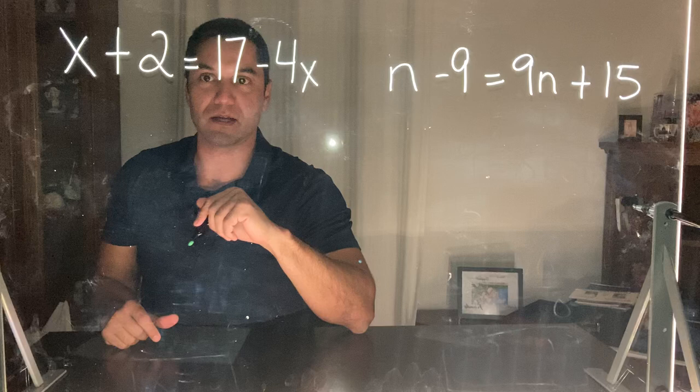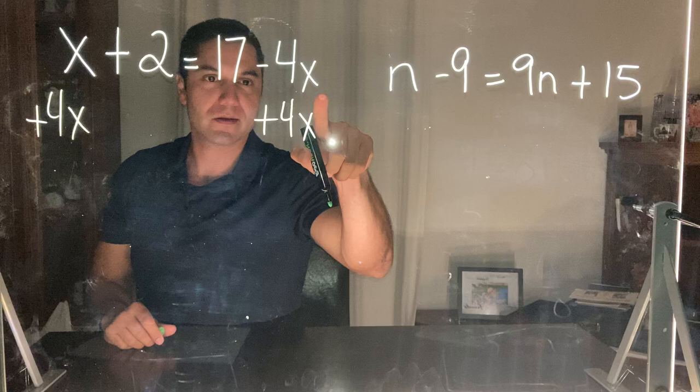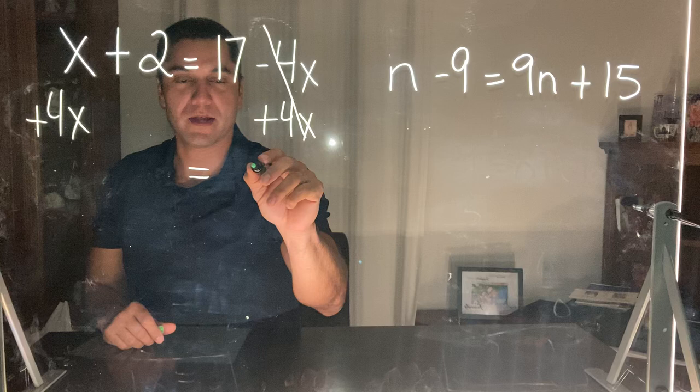To cancel out the minus 4x, I would add 4x to both sides. Here the minus 4x and the plus 4x are going to cancel each other out. So all I have now on the right hand side is 17.